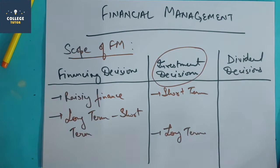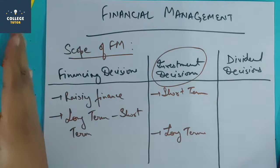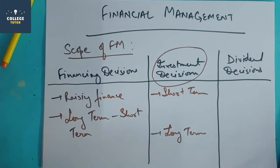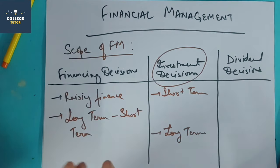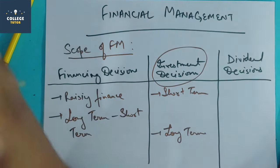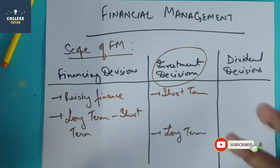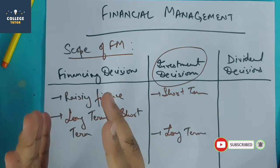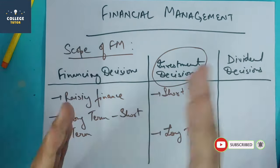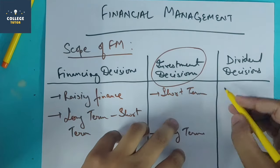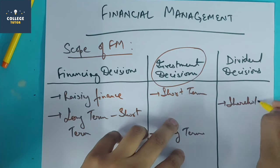Dividend decisions are basically the reward given to shareholders depending on how much profit the company generates and how many shares are held. The question is: what do we do with the profit? How much goes to shareholders as dividend, and how much do we reinvest in the company for expansion? So dividend decisions are about balancing shareholder rewards against business expansion.